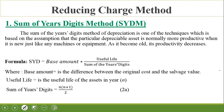Next is the reducing charge method — specifically the Sum of Years Digits Method (SYDM). This method is based on the assumption that a depreciable asset is normally more productive when it is new, and as it becomes old, its productivity decreases. The formula is: SYD = Base Amount × (Useful Life / Sum of Years Digits), where Base Amount = Original Cost − Salvage Value, and Sum of Years Digits = N(N+1)/2.